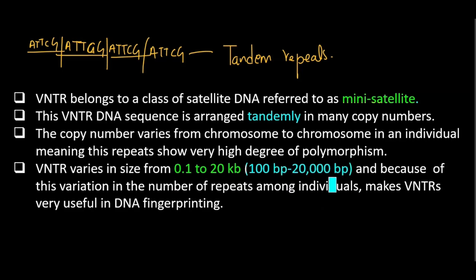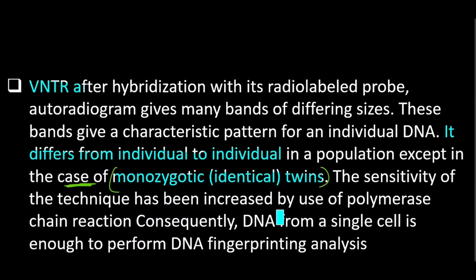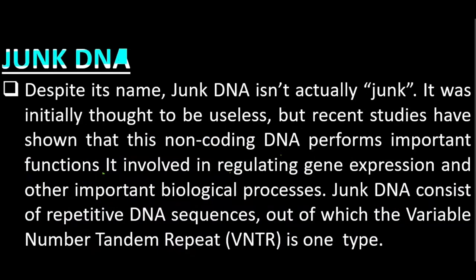After hybridization with its radioactively labeled probe, the autoradiogram gives many bands of different sizes. These bands give characteristic patterns unique to each individual's DNA — VNTRs differ from individual to individual in a population, except in the case of monozygotic twins, where VNTRs are similar. The sensitivity of this technique has been increased by the use of PCR, which allows multiple copies to be made from a single cell's DNA.